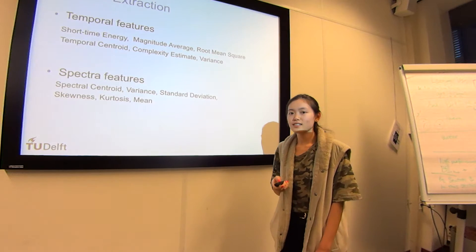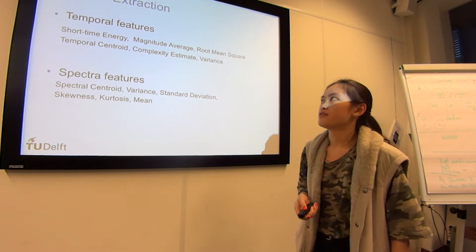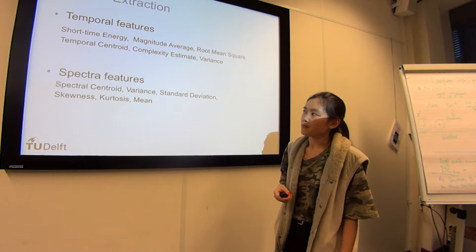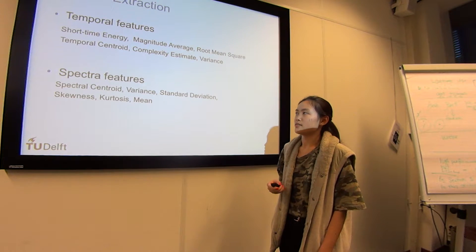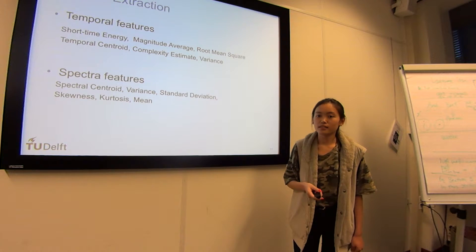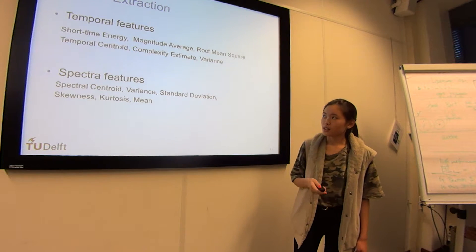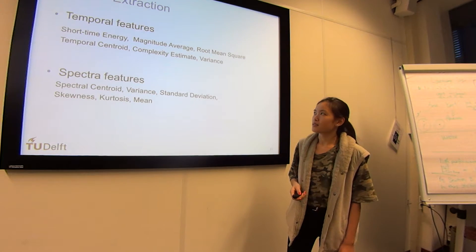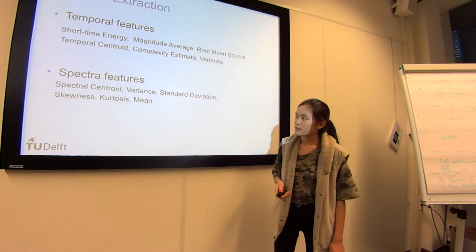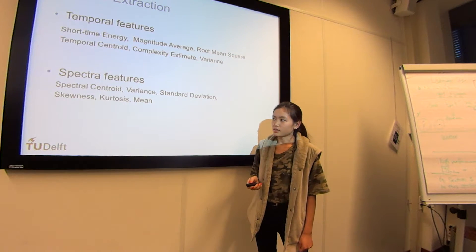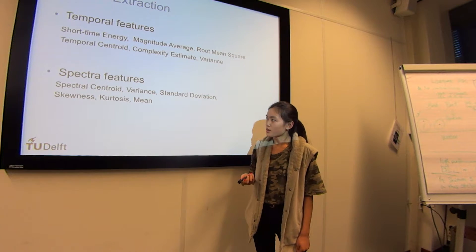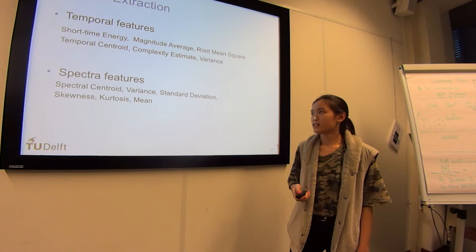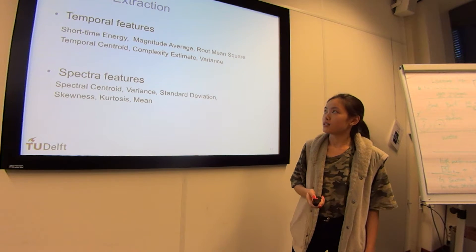The next stage is feature extraction. Through other works, there are two main aspects of features. First are temporal features, which consist of short-time energies, magnitude averages, and others. Second are spectral features, including spectral centroids, variances, and divergences. These are all calculated from the signals.